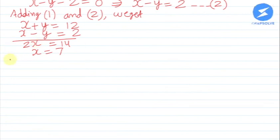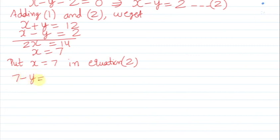Now finding y. Put x equals 7 in equation 2: 7 minus y equals 2, which implies 7 minus 2 equals y, so y equals 5.